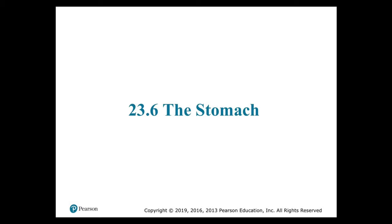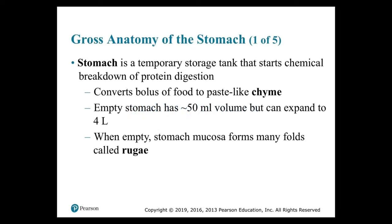Section 23.6: the stomach. We're going to describe the anatomy of the stomach, its histological features, and its roles in digestion and absorption. The stomach performs four major functions: bulk storage of ingested food; mechanical breakdown of ingested food; disruption of chemical bonds through acids and enzymes; and production of intrinsic factor — a glycoprotein required for the absorption of vitamin B12 in the small intestine.